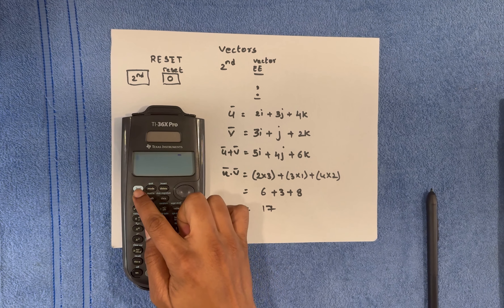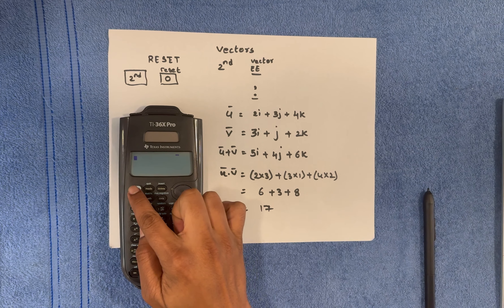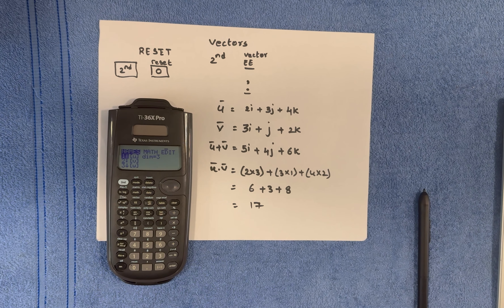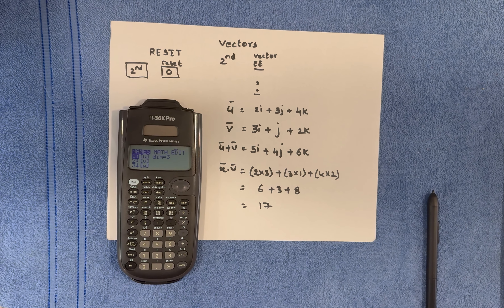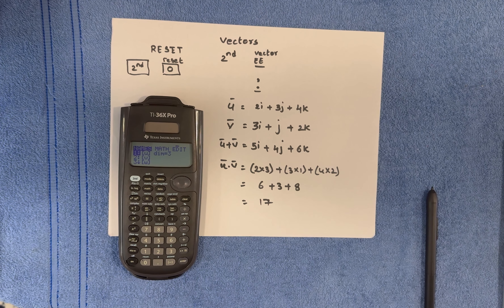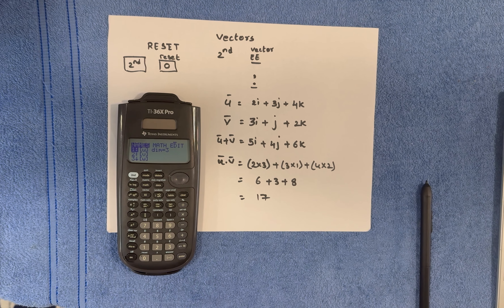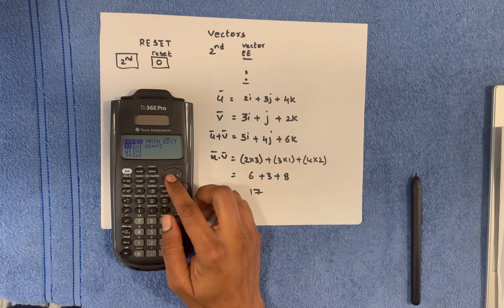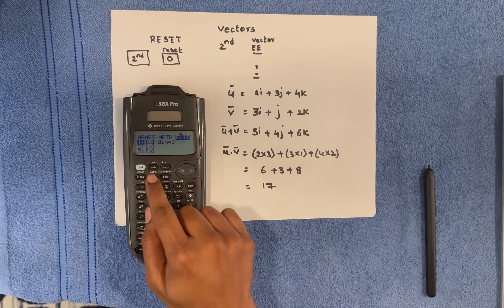Hit Second again and go to Vectors. You can see 'dim 3' beside vector U, which confirms that the first vector is assigned a dimension of three and its values are stored. Now for the second vector, go to Edit.